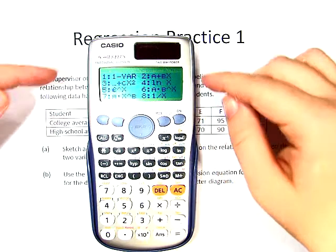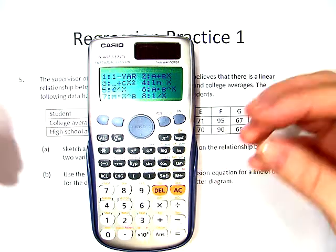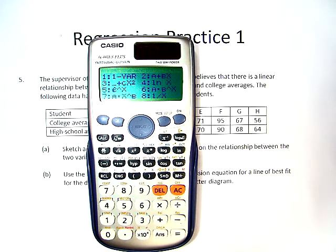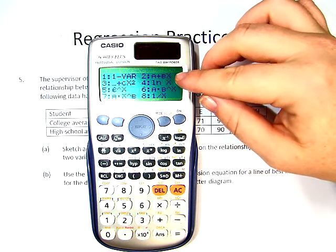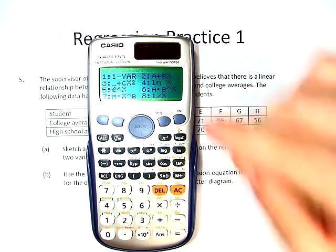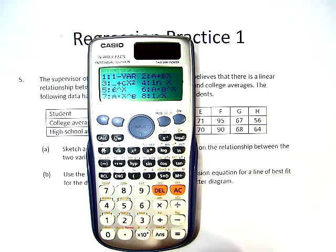Except now, all of this gobbledygook, all of these extra things, actually matter. We're not dealing with one variable. Instead, we're dealing with two. So we're going to go to the second choice, A plus BX, which will help us create our equation.